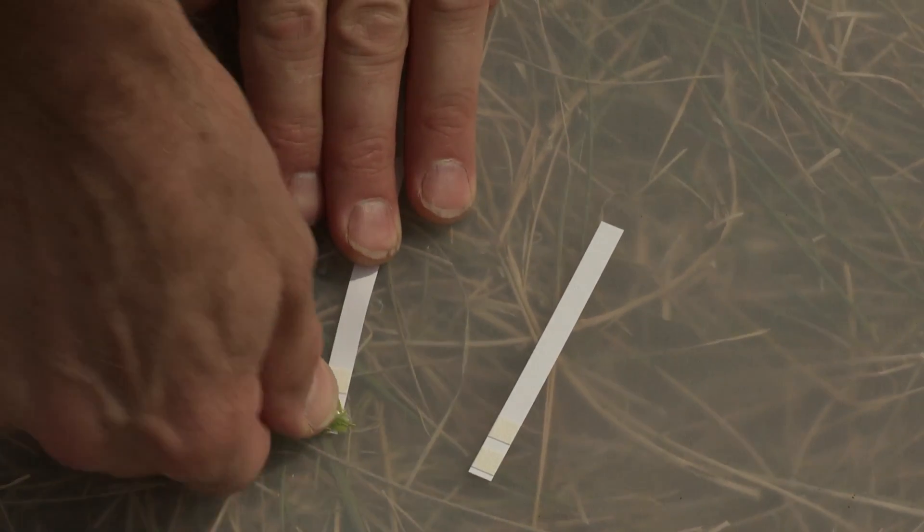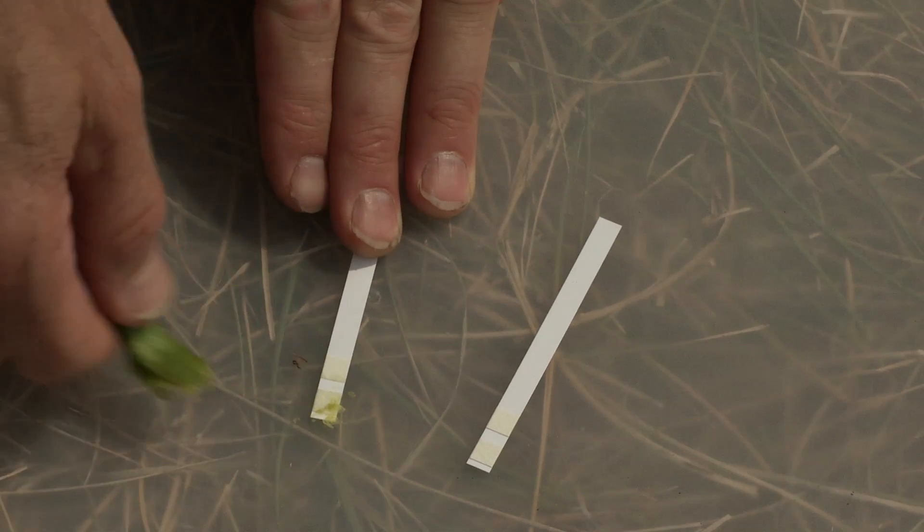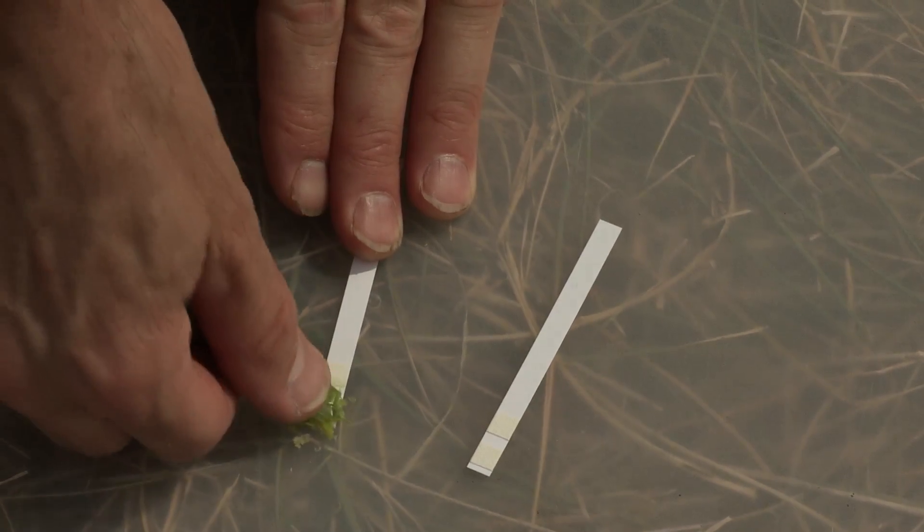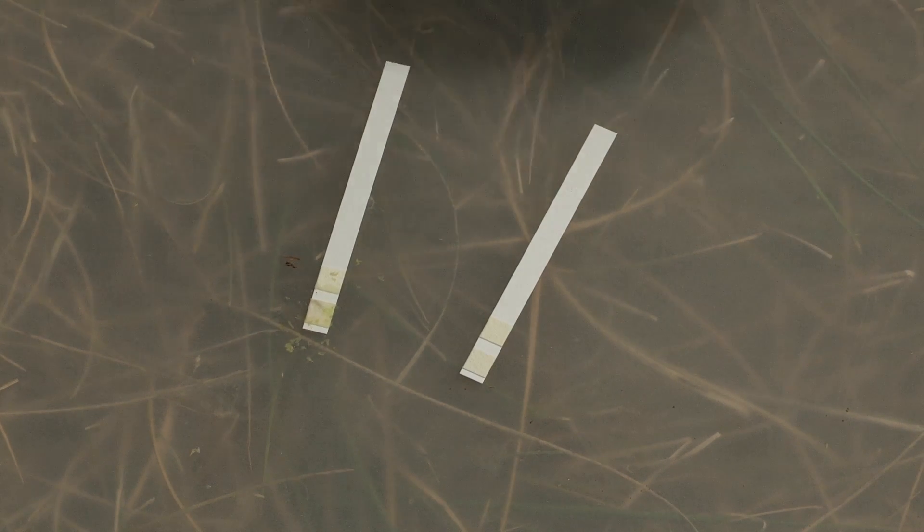You can take a stem of, for example, sorghum sudan grass in this case, and just simply squeeze a little bit of juice out on the end of the test strip and look to see if there's any color change. The recommendation is after the juice is squeezed on there to wait for one minute.